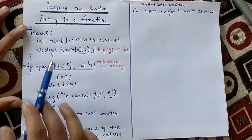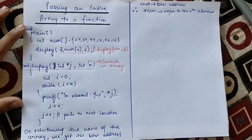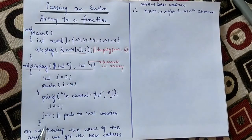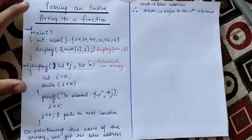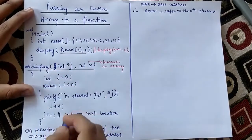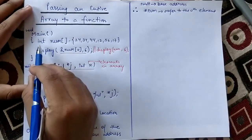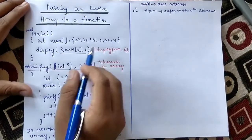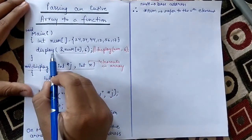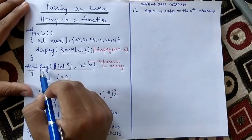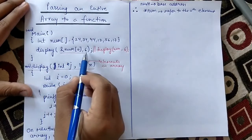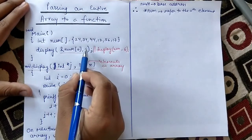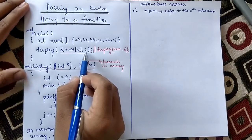In the previous video we had not taken a function — we were simply displaying the values in which we were accessing the array elements using pointers. Here, we have declared an array inside the main function, then we are calling the display function and passing the base address of the array, and we are also passing the length of the array.